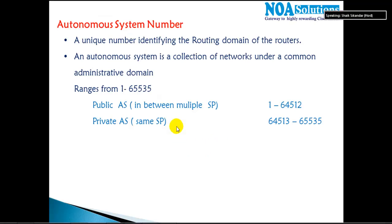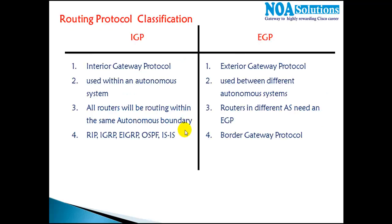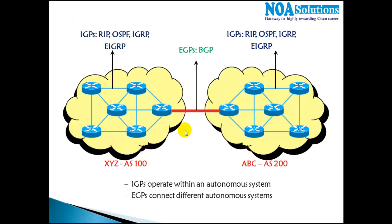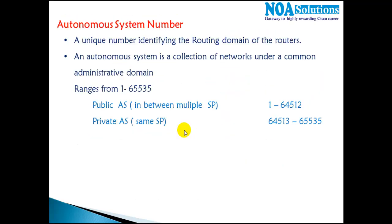In this section we'll see what an autonomous system number is, what exactly it identifies, and then we'll see the different protocol categories like IGP and EGP classifications. An autonomous system number is a number which identifies a routing domain of routers, or we can say it is a collection of networks.